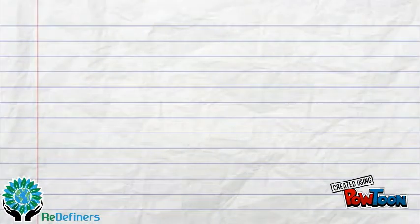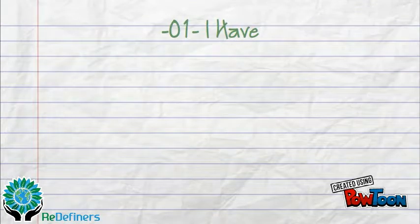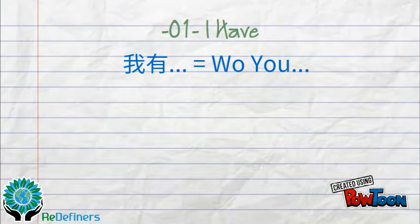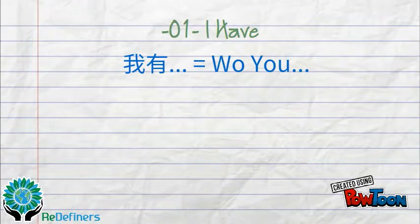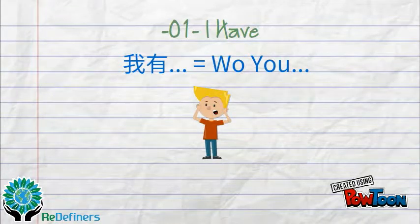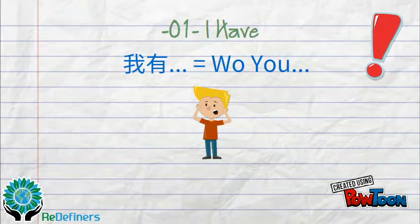Number one: I have. In Mandarin, it is 我有 (wǒ yǒu). You can demonstrate all the face features or body parts that we learned before by using this phrase.